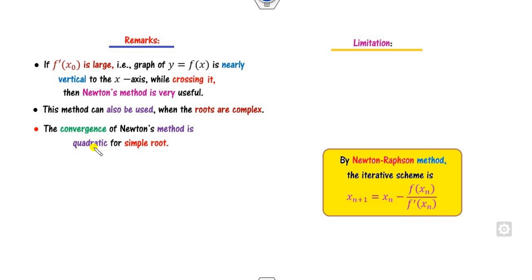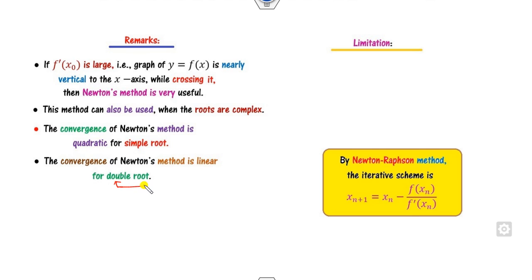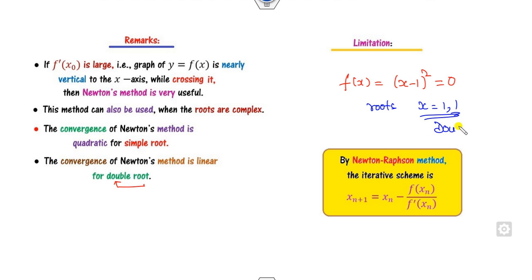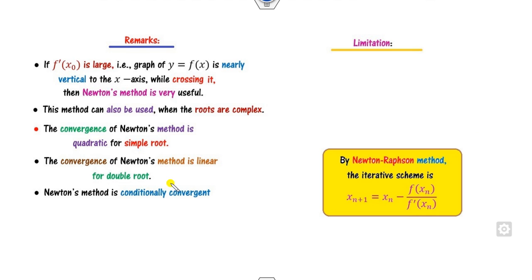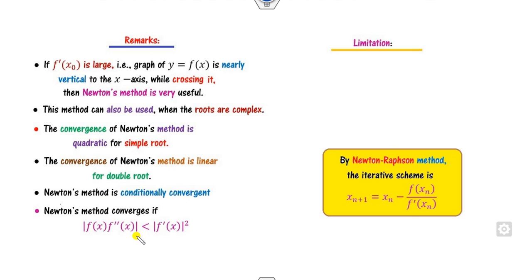The convergence of the Newton-Raphson method is quadratic for simple roots, as already proved. However, for double roots — for example, (x - 1)² = 0 with root 1 repeated — the convergence is linear. Additionally, the Newton method is conditionally convergent, and the condition for convergence must be satisfied for all x in the interval I.